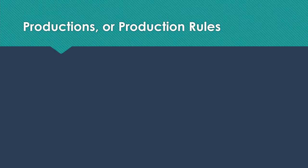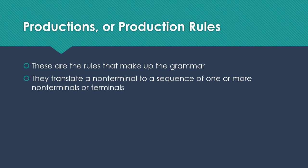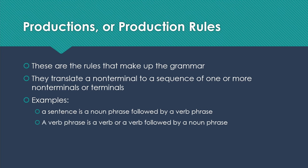And then finally, we have productions or production rules. These are the rules that make up the grammar, the things that connect our non-terminals and our terminals to define what the language looks like. Each rule is going to translate a non-terminal to a sequence of one or more non-terminals or terminals. A sentence might be a noun phrase followed by a verb phrase. And in fact, in English, usually is. A verb phrase is typically a verb or a verb followed by a noun phrase. Then a verb would be one of a list of words: things like saw, liked, ate, visited, loved, and so on.